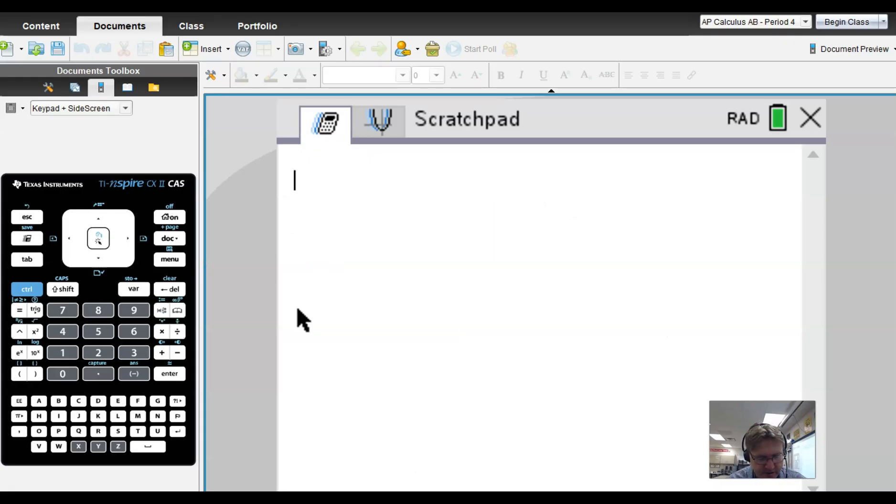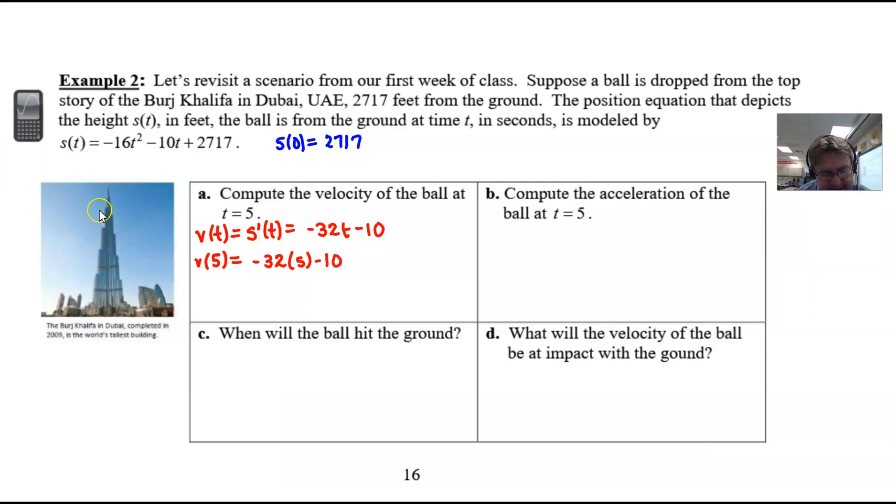Here we go. We compute -32 multiplied by 5, then subtract 10, and that answer is -170. We'll return to the document and place that as our answer for part A.